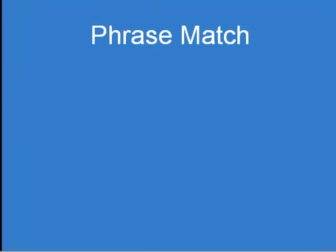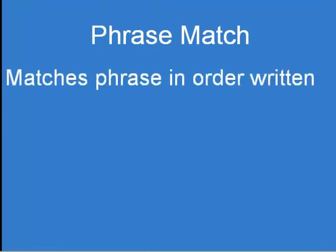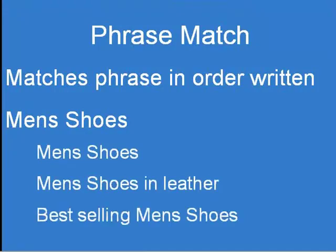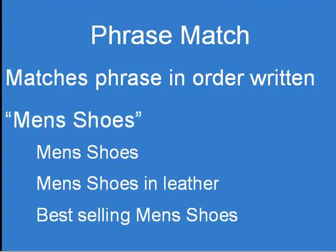Let's talk about phrase matching, because this is quite a powerful one. What this means is that if the phrase typed into Google matches your keywords in the order they are written in your keyword phrase, your ad will show. It doesn't matter if there are words either side, provided your phrase appears somewhere in the search query. So with 'men's shoes,' the phrases 'men's shoes,' 'men's shoes in leather,' and 'best-selling men's shoes' would all trigger a phrase match. To create a phrase match, you put quotation marks around the keyword.